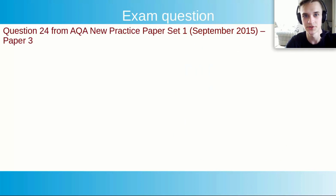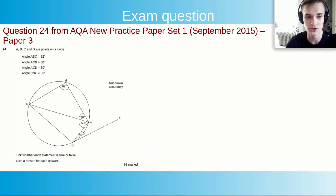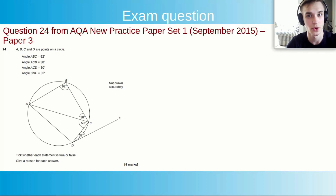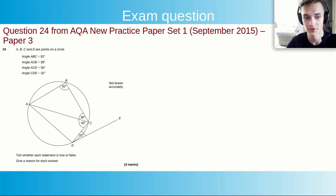Now let's look at an exam question — Question 24 from the AQA New Practice Paper Set 1, September 2015, Paper 3. This was one of the harder questions. For circle theorems you generally get 3, 4, 5, or 6 mark questions, with 5 and 6 markers being the most common. I think this question should have been at least 5 marks given its complexity.